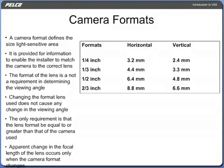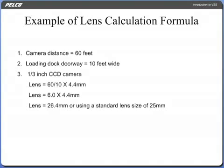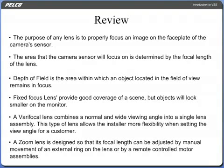The format of the lens is not a requirement in determining the viewing angle. As a result, changing the format lens used does not cause any change in the viewing angle. The only requirement is that the lens format be equal to or greater than that of the camera used. This prevents shading of the video picture, more commonly known as the porthole effect. An apparent change in the focal length of the lens occurs only when the camera format changes.